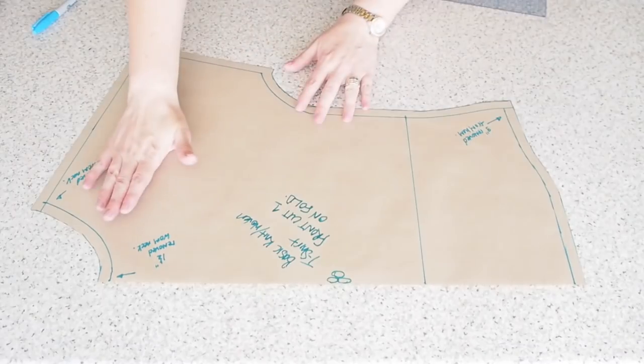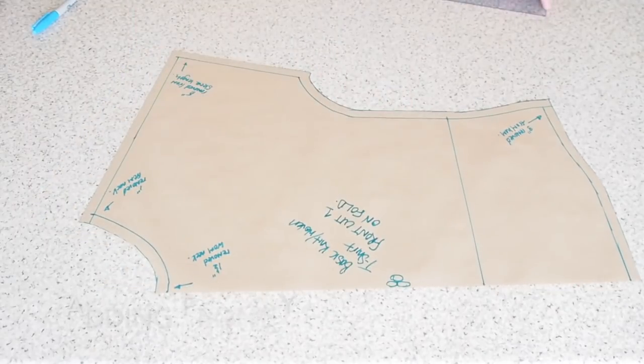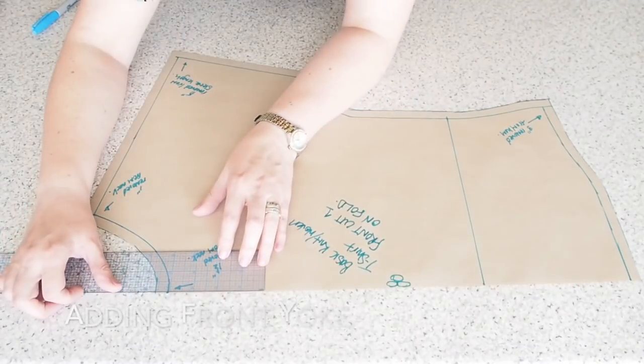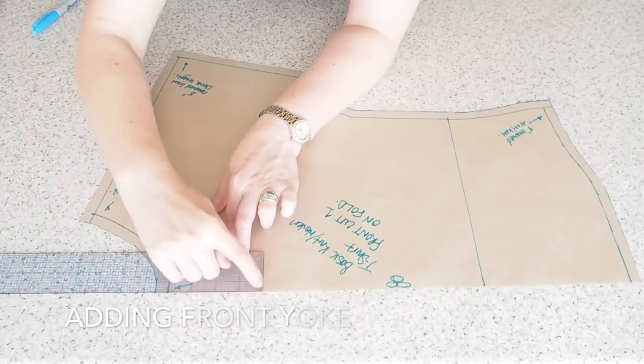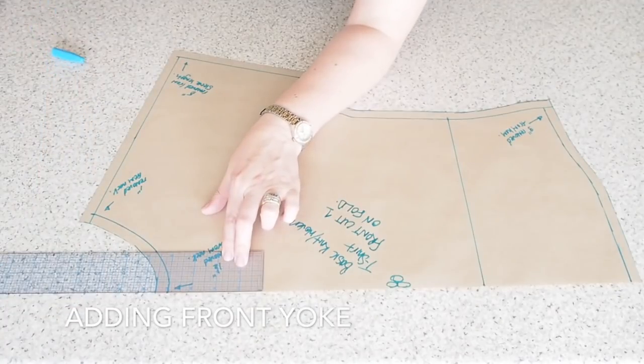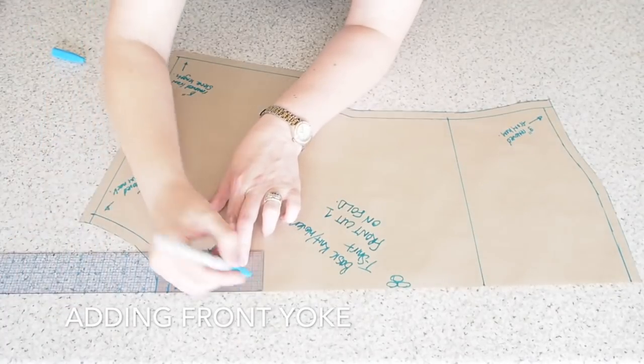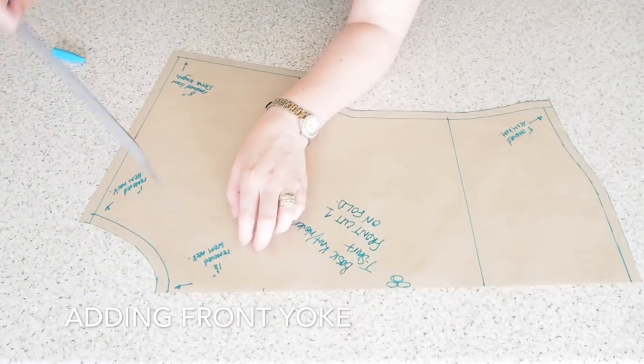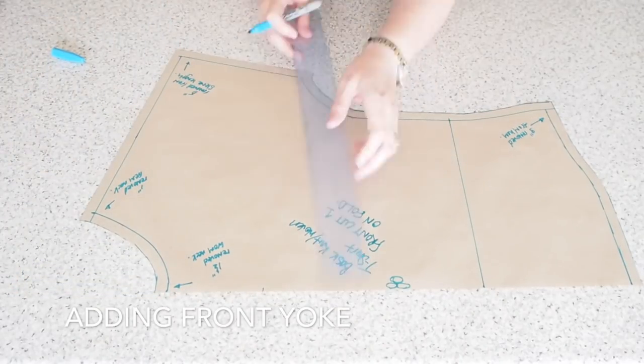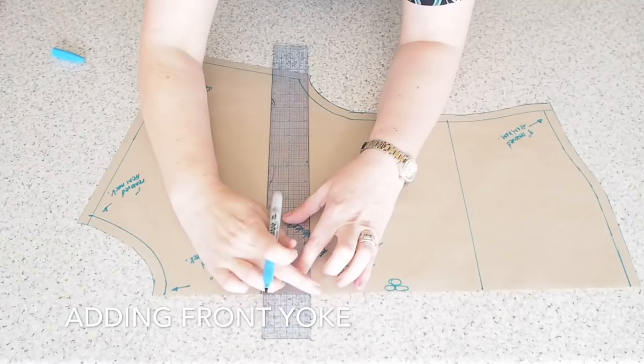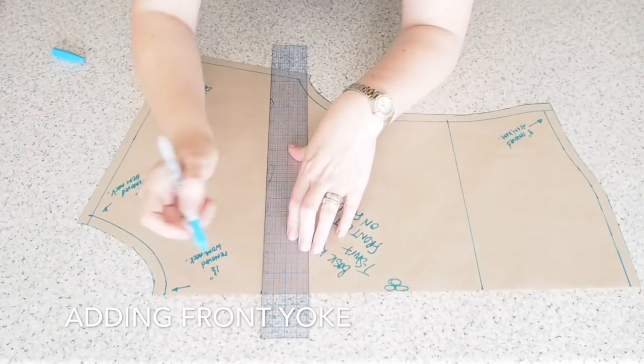And now I've decided I want to put a yoke in the front. So to do that, I'm measuring down four inches from the neck. Popping in a little dot there. And then at a right angle to that measurement, I'm just going to draw a line straight across.